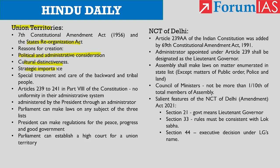Article 239 to 241 in Part 8 of the Constitution deals with union territories, and there is no uniformity in their administrative structure. Every union territory is administered by the president through an administrator appointed by him. The administrator of a union territory is an agent of the central government and is not the head of a state like the governor. The president can also appoint the governor of a state as the administrator of an adjoining union territory. Not all union territories have an administrator — some are directly governed by the president.